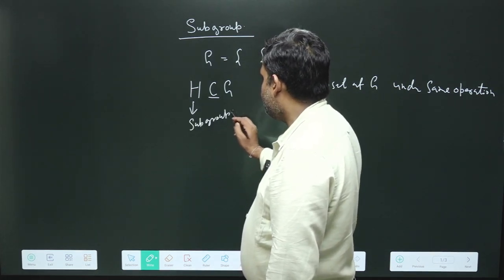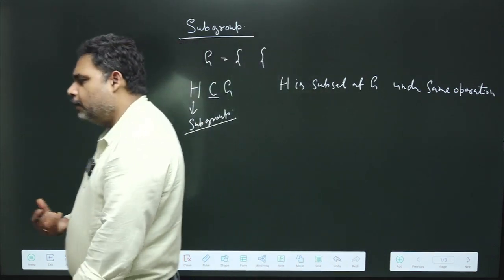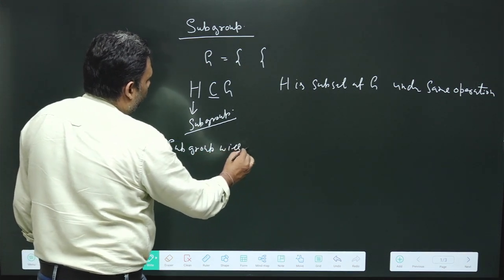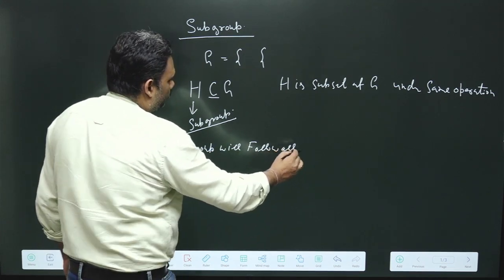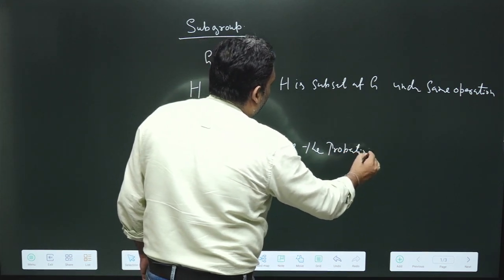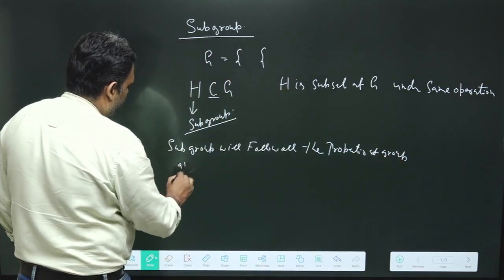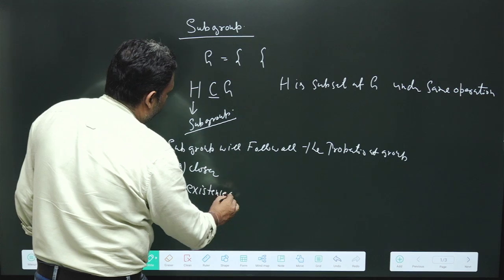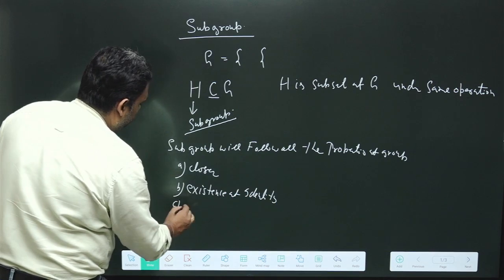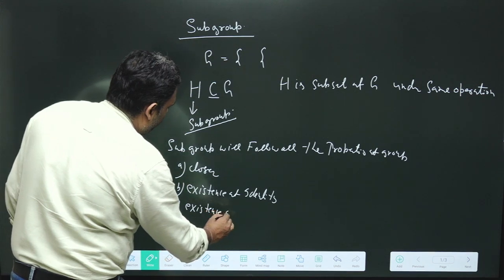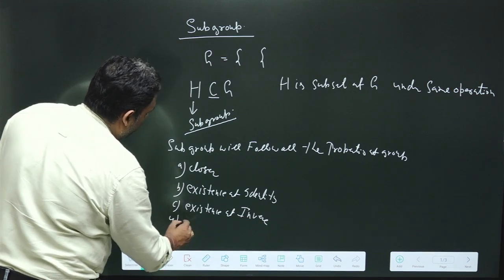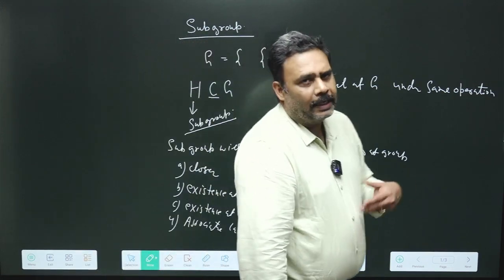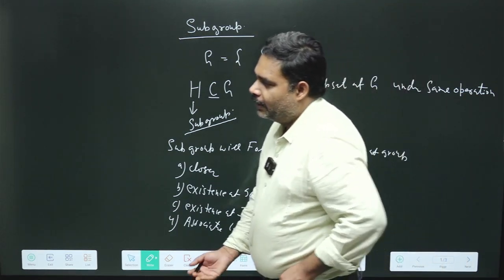This H is said to be a subgroup, and a subgroup will follow all the properties of a group. You can remember these properties: first is the closure relation, second is existence of identity, third is existence of inverse, and obviously fourth is the associative law. So G will follow these things, and H will also follow these things. Let us try to understand all this with one particular example.